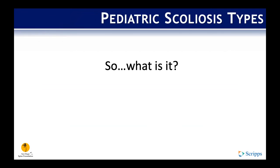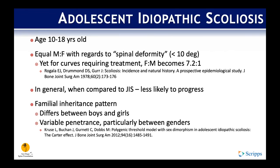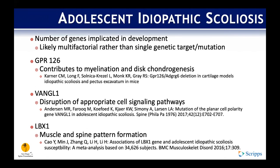AIS is age 10 to 18. For curves requiring treatment, the condition is largely female dominant at 7.2 to 1. Compared to JIS, AIS is less likely to progress. There does seem to be some familial inheritance pattern, though penetrance is debated. A number of genes have been implicated in AIS development, including those involved in myelination, dyschondrogenesis, cell signaling pathways, and muscle and spine pattern formation, with variations identified at higher rates in AIS patients.